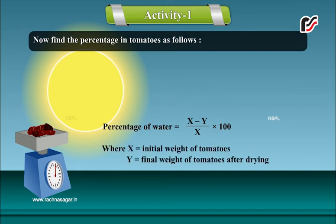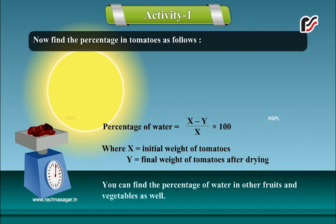Where x equals initial weight of tomatoes, y equals final weight of tomatoes after drying. You can find the percentage of water in other fruits and vegetables as well.